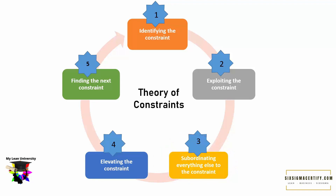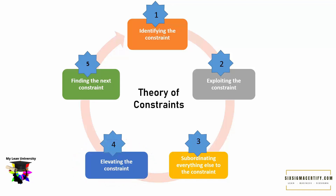The fourth step is elevating the constraint, where we try to minimize or eliminate the bottleneck — we may decrease the time or change the machine, man, or material. The fifth step is finding the next constraint, because the Theory of Constraints is a continuous improvement principle, and once one bottleneck is identified and resolved, there may be another problem to improve.